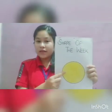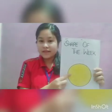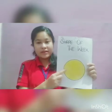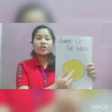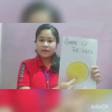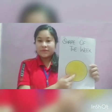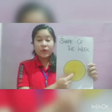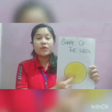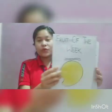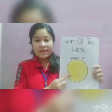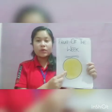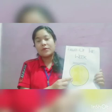Now you tell me. Which shape is this? Circle — very well done. This is the shape of the week. And which color is this? Yellow. This is the color of the week. And which fruit is this? Mango. This is the fruit of the week. Very good.